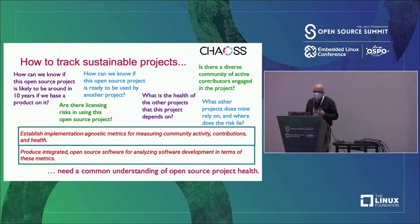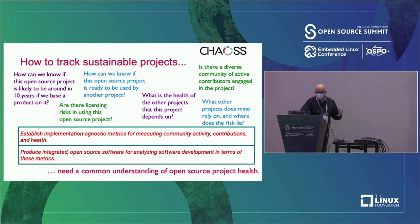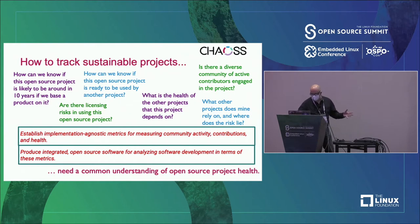Questions like: how can we know if this open-source project is going to be around in 10 years? What is the health of the other projects that this project depends on? Is there a diverse community? Our main aims are establishing implementation-agnostic metrics for measuring community activity, contributions, and health, along with integrated software for analyzing such things.